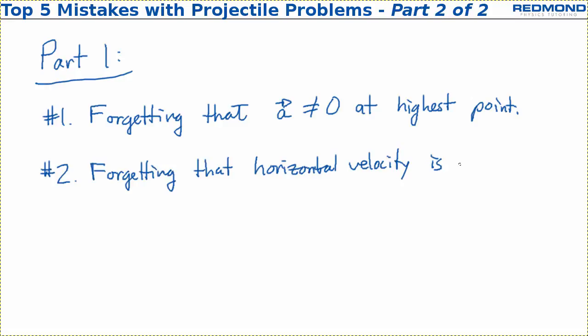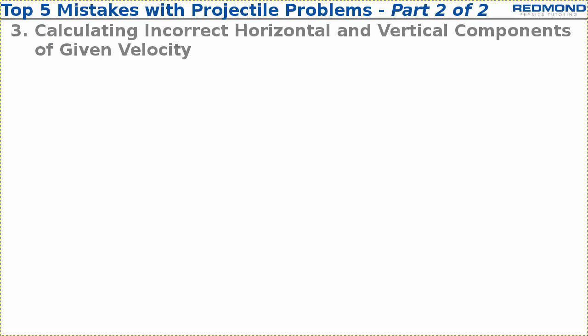The third most common mistake is calculating incorrect horizontal and vertical components of a given velocity. To avoid this mistake, practice with vectors. Please, if you want to pass physics, practice with vectors.